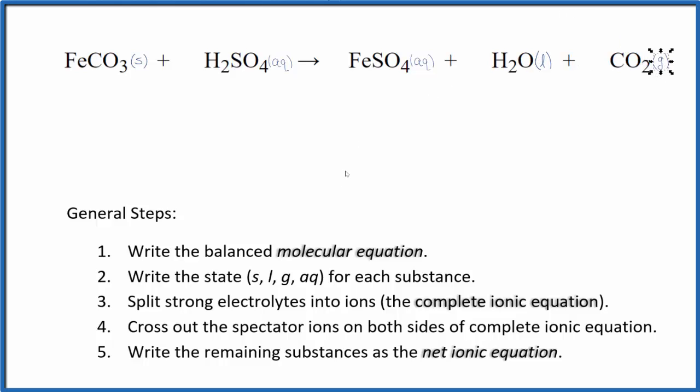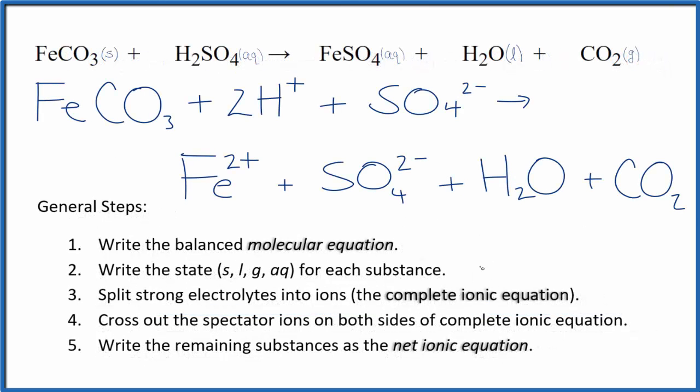So we have our states. Now we can split the strong electrolytes into their ions for the complete ionic equation. That'll look like this. So this is the complete ionic equation for FeCO3 plus H2SO4.